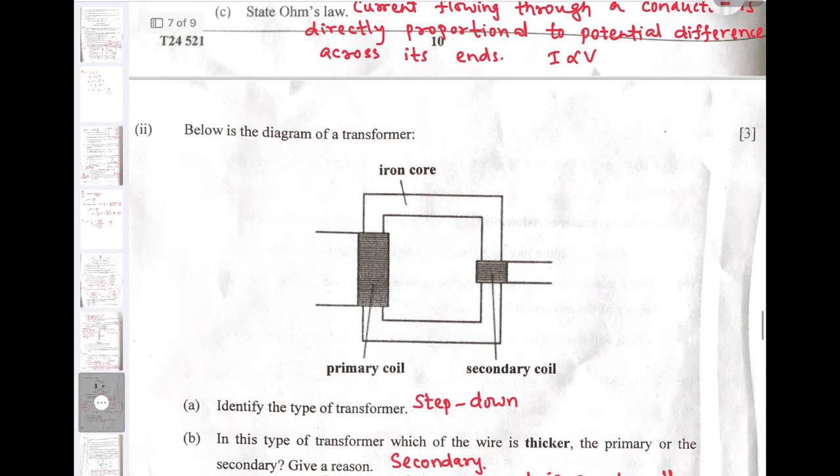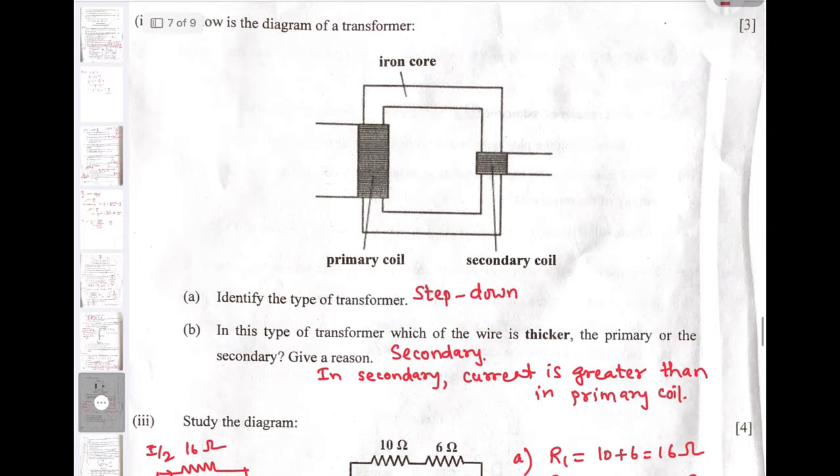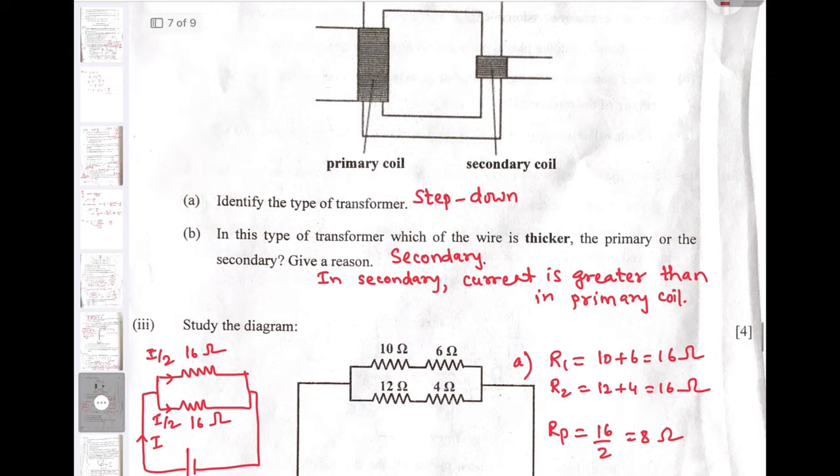Next: Below is a diagram of transformer. Based on the diagram, it is very clear that it is step down transformer because the number of turns in the secondary coil are less than number of turns in the primary coil. Next question: In this type of transformer, which of these wires is thicker? Secondary coil wire must be thicker because in secondary, current is greater than the current in primary coil.